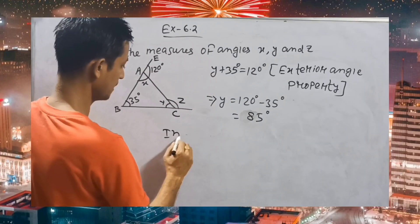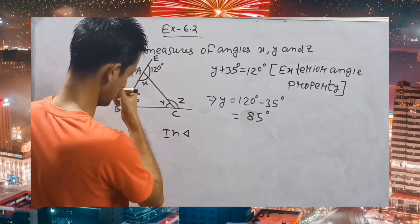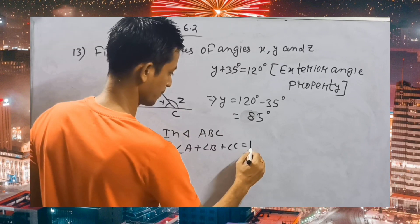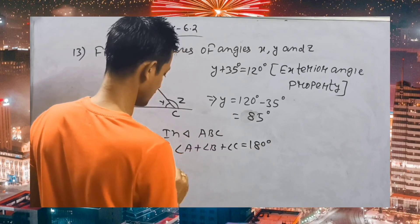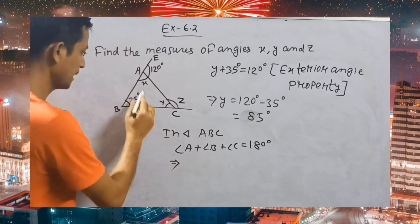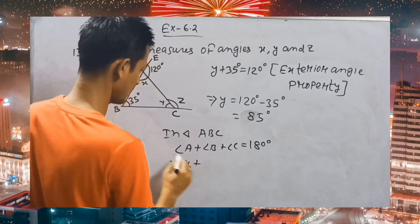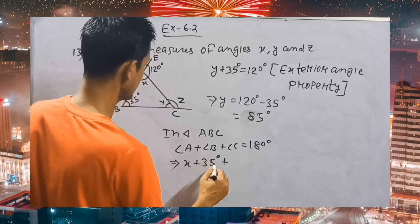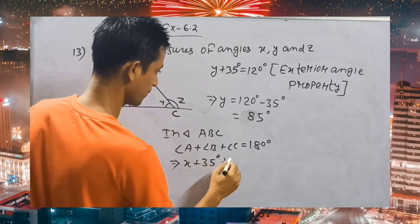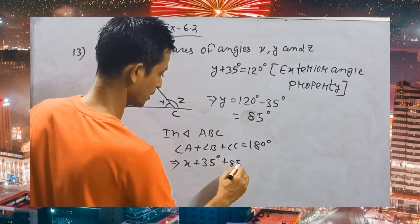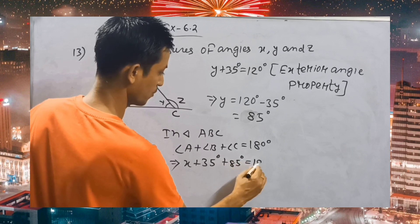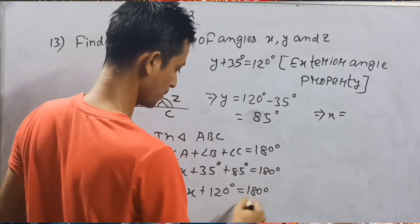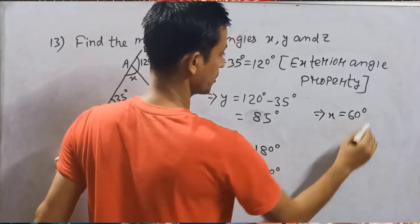In triangle ABC, the angle sum is 180 degrees. Angle A means X, angle B means 35 degrees, and angle C means Y. We have found Y equals 85 degrees. So X plus 35 plus 85 equals 180, therefore X is equal to 180 minus 120, giving X equals 60 degrees.